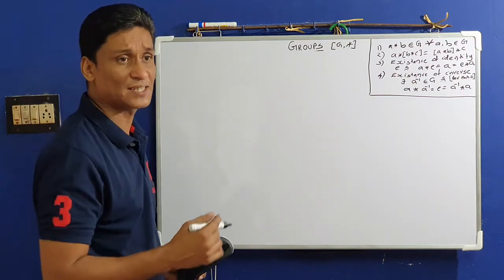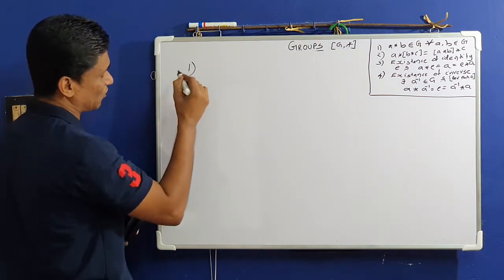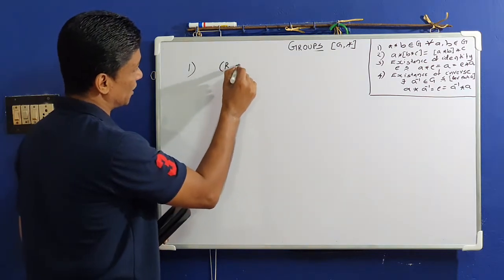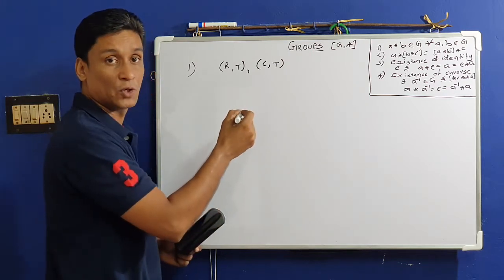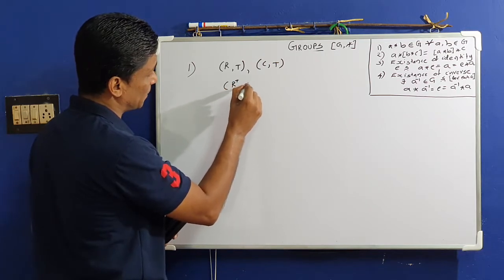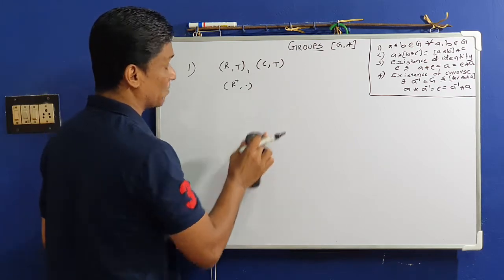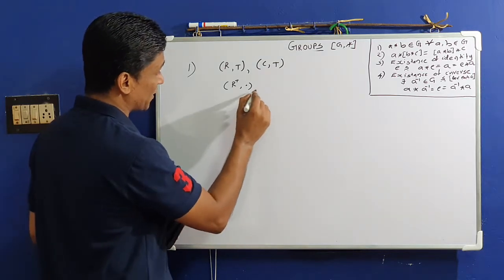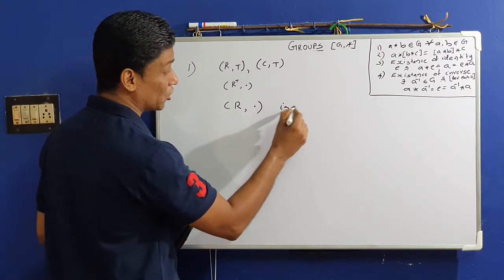Now let's take a look at some examples. The set of all real numbers under addition is a group. The set of all complex numbers under addition is also a group. However, the set of all real numbers under multiplication is not a group.